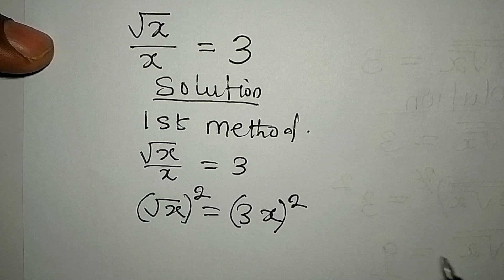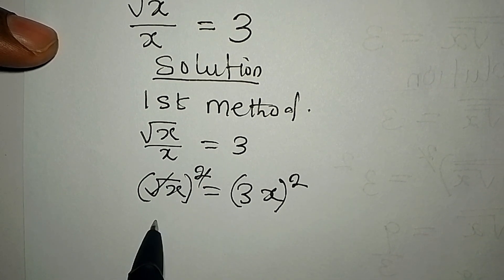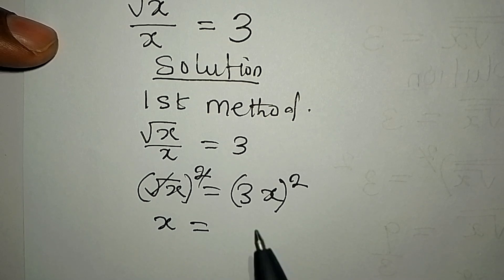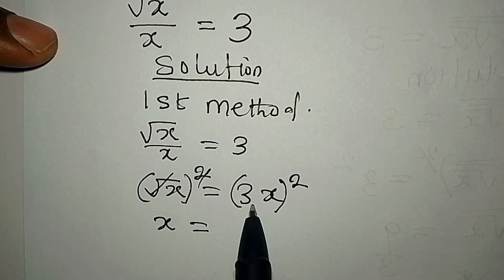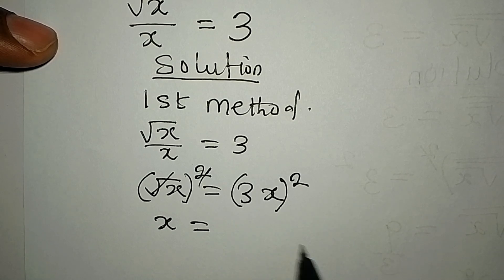So x is now equal to—here we are having 3x squared, so it's going to be 3x times 3x, that would be 9x squared.